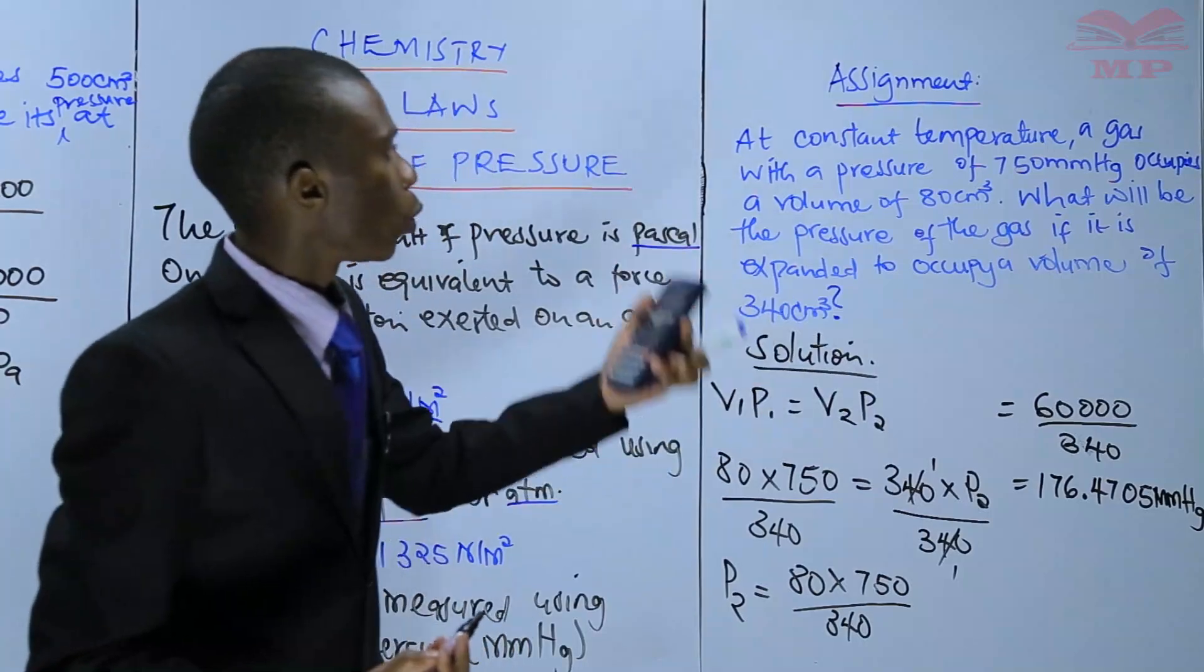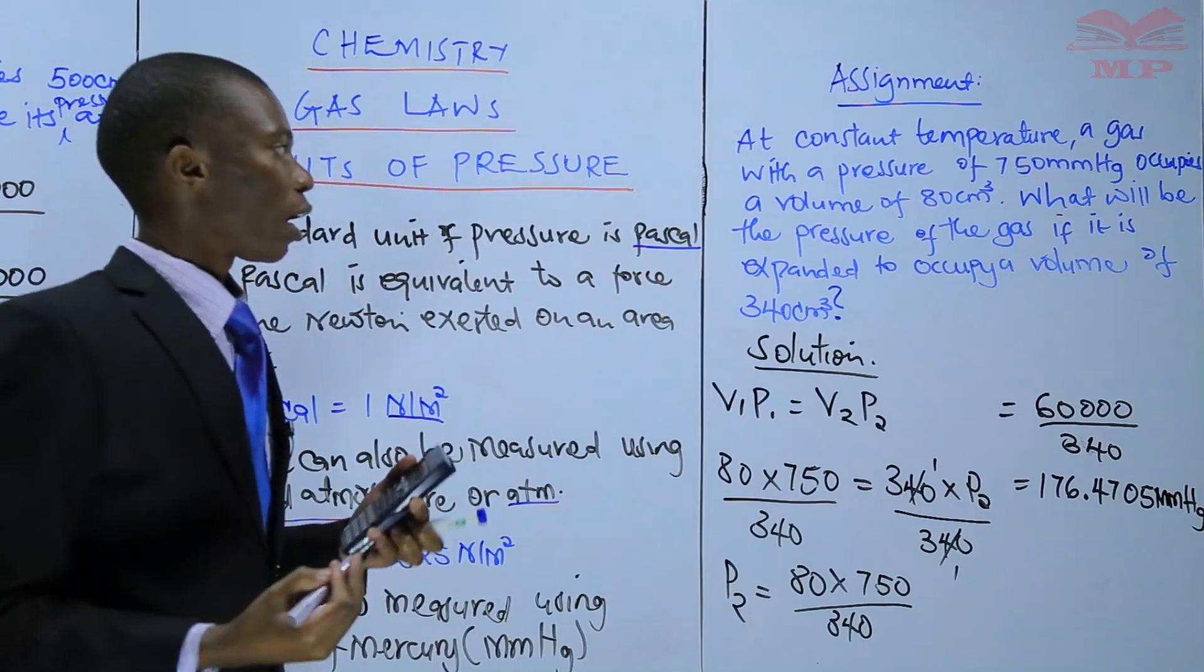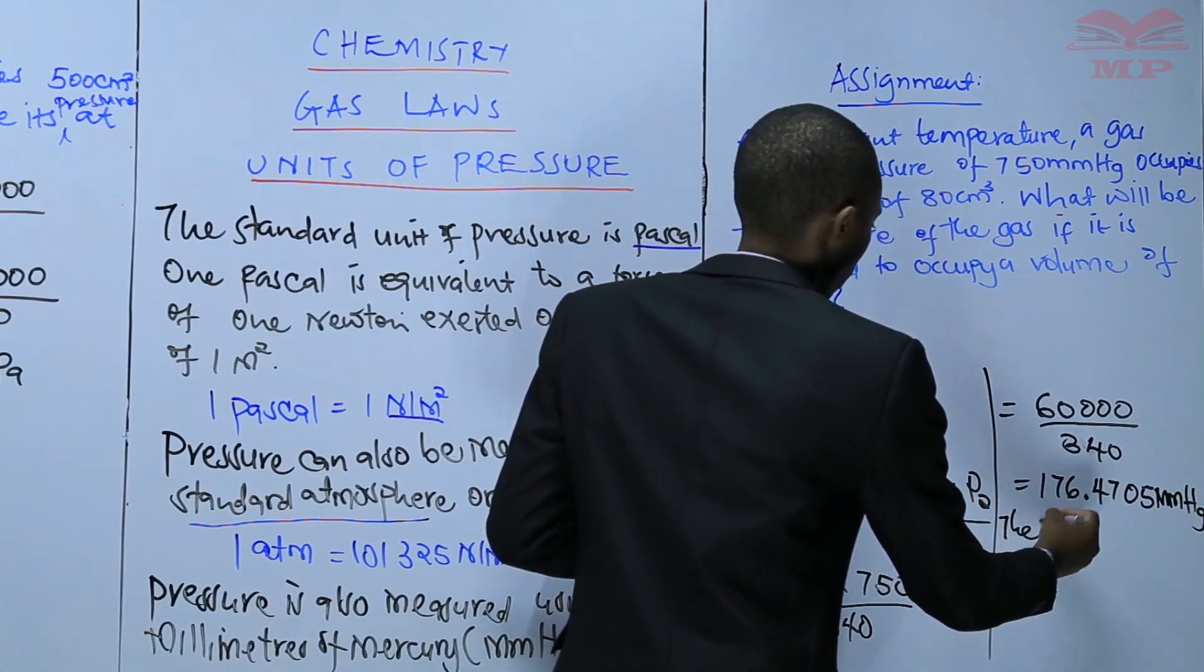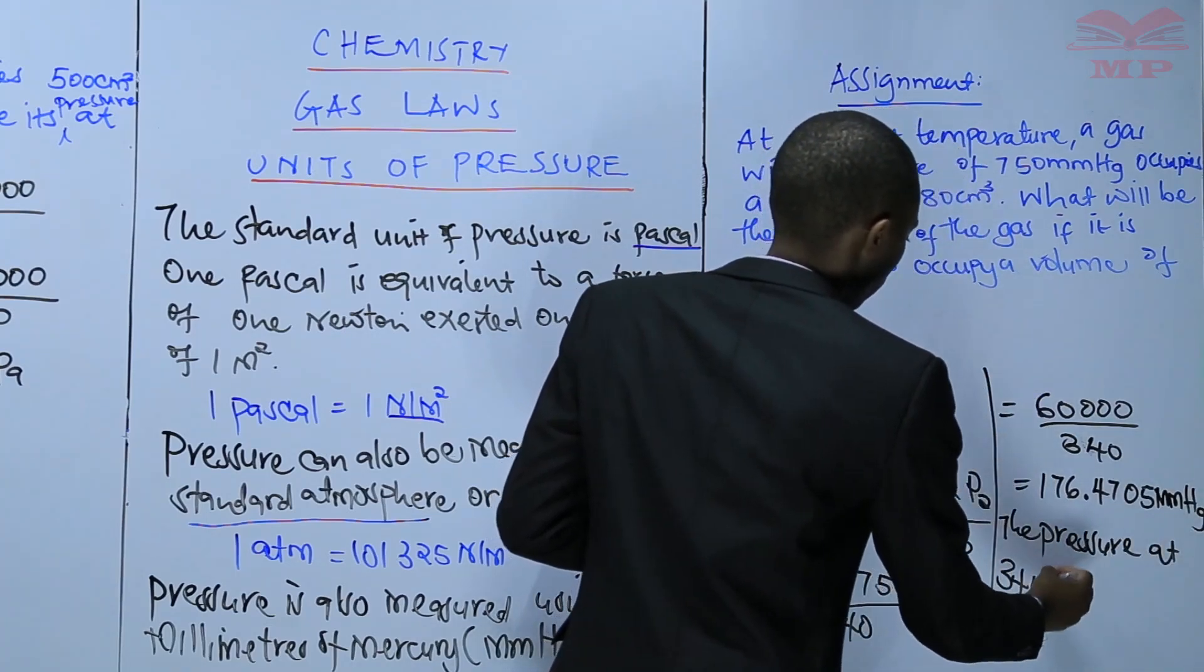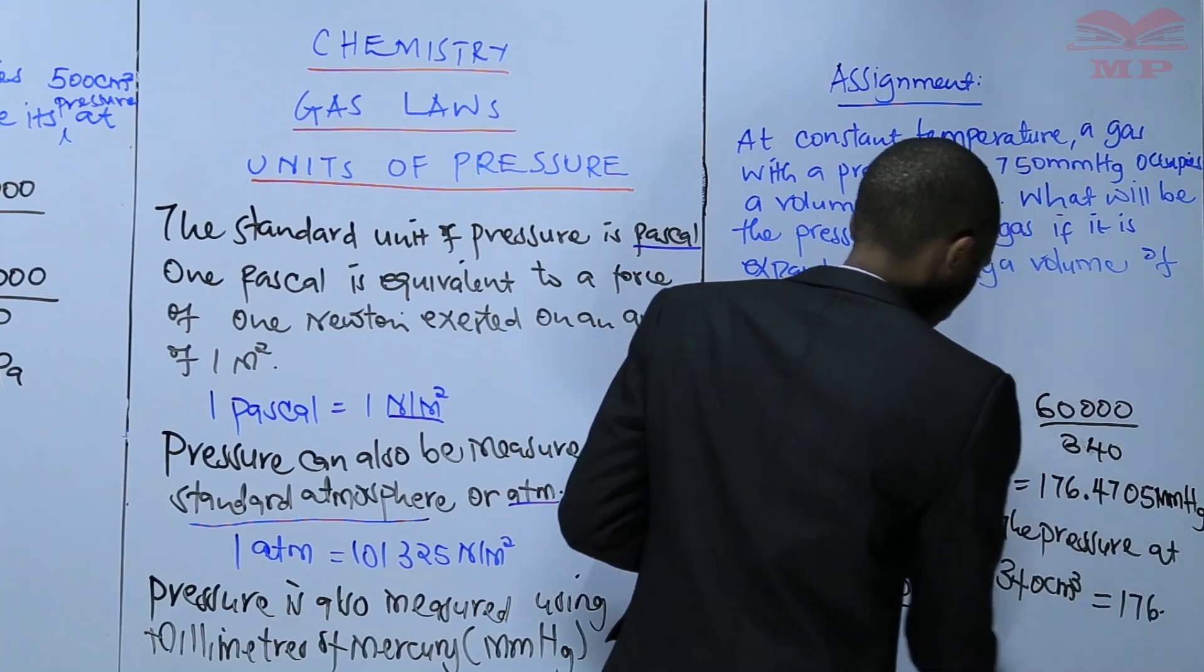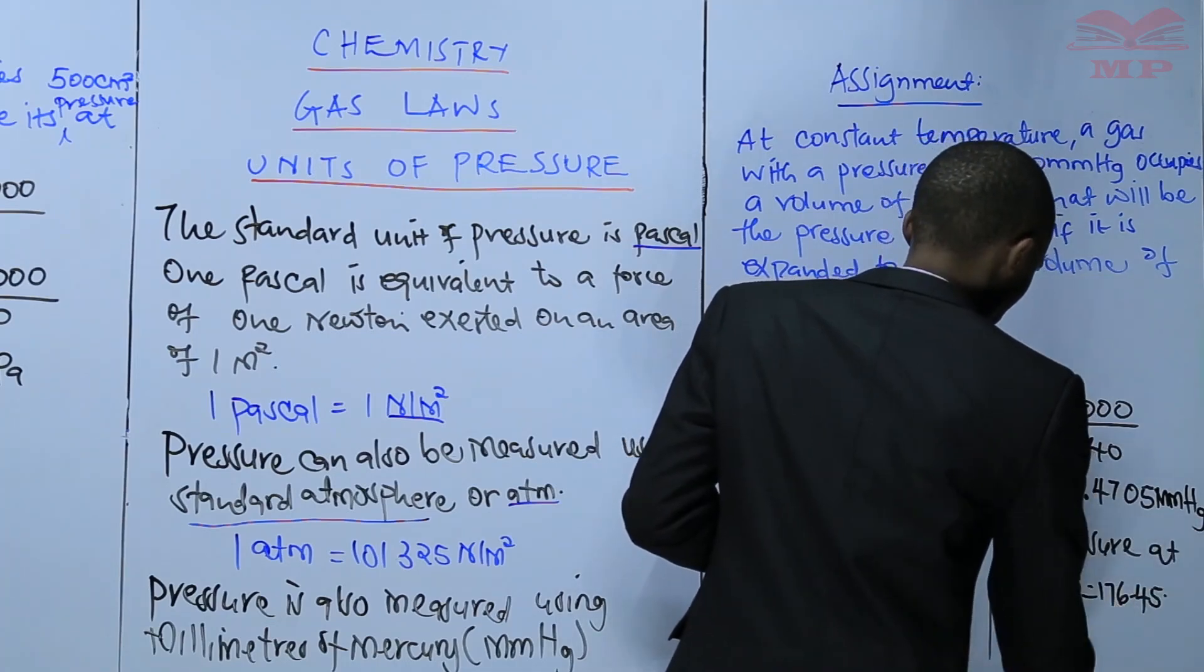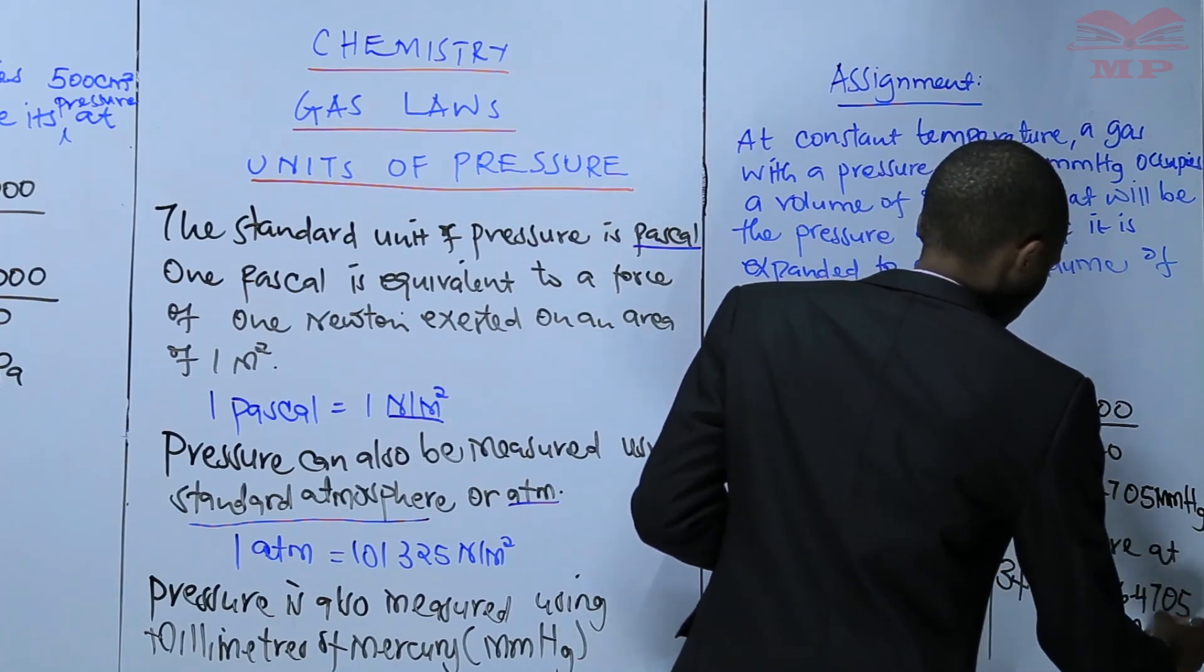From the question: what will be the pressure of the gas if it is expanded to occupy a volume of 340? Therefore, we will say that the pressure at 340 centimeters cubed will be 176.4705 millimeters of mercury.